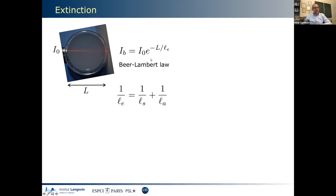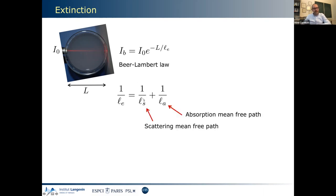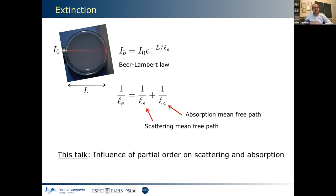This attenuation is something you can measure: you measure the transmitted versus incident intensity. This is an extension of the Beer-Lambert law — usually learned in chemistry for purely absorbing samples — but it can be generalized to a material that is simultaneously scattering and absorbing. This exponential attenuation gives access to the extinction mean free path, which sums the effects of scattering and absorption mean free paths, and is a measurable quantity.